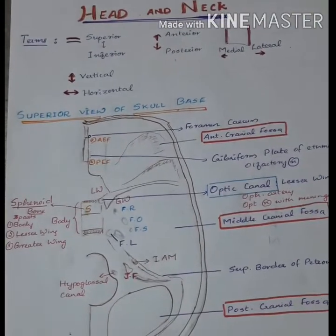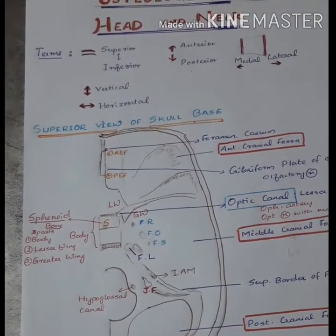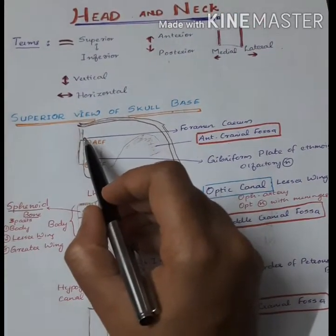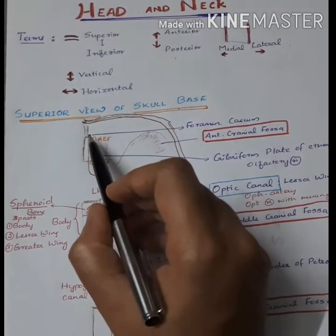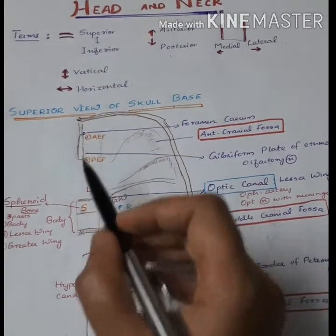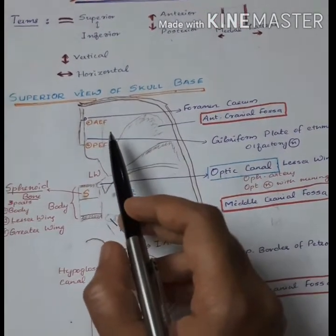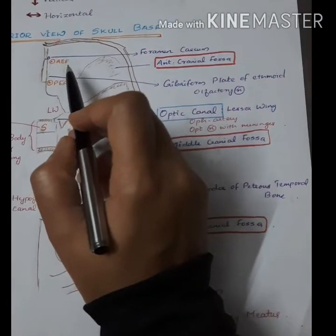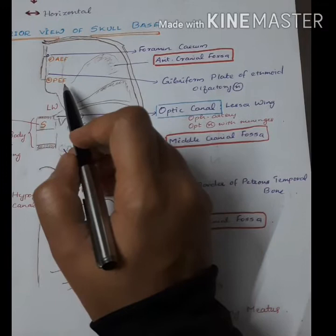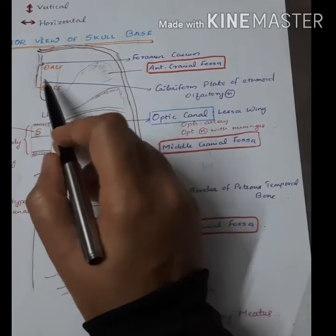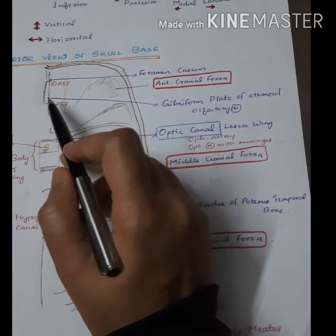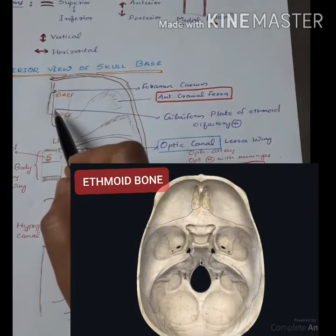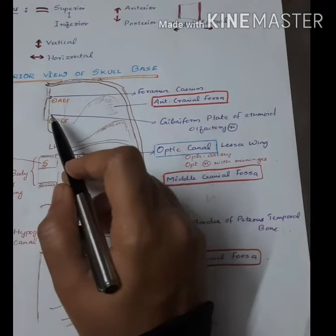Next we can look into the foramina. First of all, this is the foramen cecum. Next is the anterior ethmoidal foramen, then the posterior ethmoidal foramen, present near the cribriform plate. This is the cribriform plate of the ethmoid bone, through which the olfactory nerve passes.